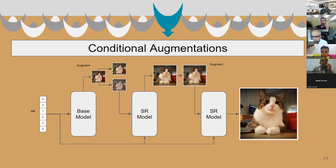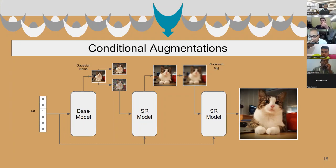The authors termed these augmentations as conditional augmentations. Many augmentations might work, but they showed that Gaussian noise, Gaussian blur augmentations, and some horizontal flips are enough to generate state-of-the-art samples. So let's look at each of these steps in detail.